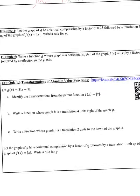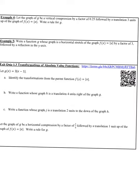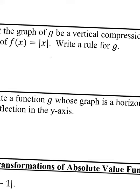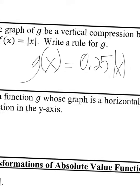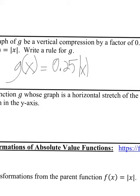Example 4: let the graph G be a vertical compression by a factor of 0.25, followed by a translation 3 units up of the graph f of x equals absolute value of x. Write a rule for G. Vertical compression means multiplying 0.25 on the outside; translating 3 units up means adding 3 on the outside. So G of x equals 0.25 times the absolute value of x, plus 3.